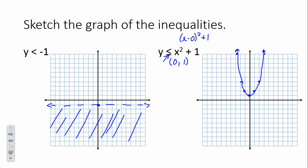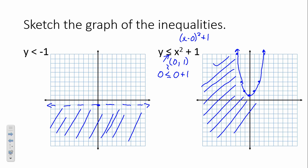Now I just have to decide which way to shade. I'm going to put a point in there — the easiest point is the origin (0, 0). Is 0 less than or equal to 0 squared plus 1? Yes, 0 is less than 1. So which way do we shade? We shade outside, because (0, 0) made that true.